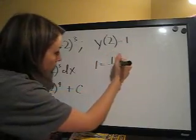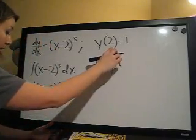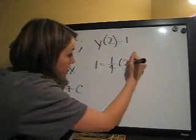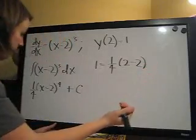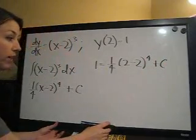equals, and then the equation that we got, 1/4 times—we plug in 2 for x—(2-2)⁴ plus C. And then we solve for that.